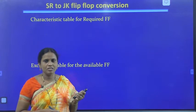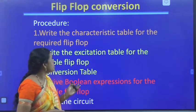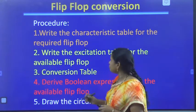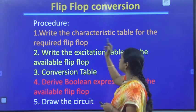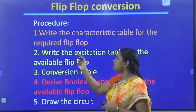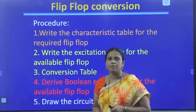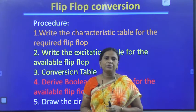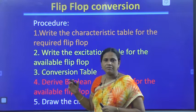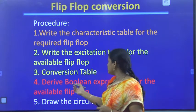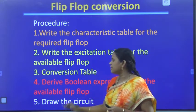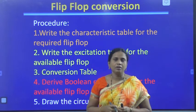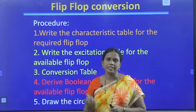Let us see the procedure for flip-flop conversion. First, write the characteristic table for the required flip-flop. After that, write the excitation table for the available flip-flop. Then write the conversion table, derive Boolean expressions for the available flip-flop inputs, and finally draw the logical circuit using the obtained expressions.